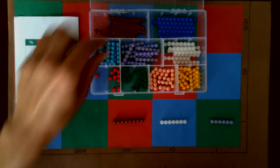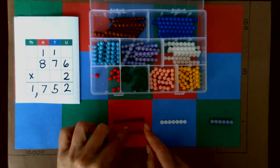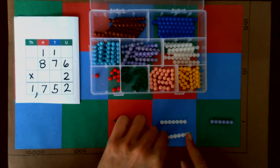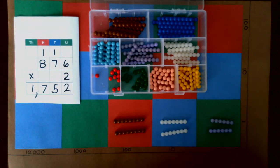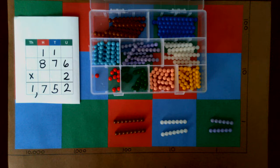Now our multiplier tells us to do that two times, so we're going to build eight hundred, seven tens, six units.